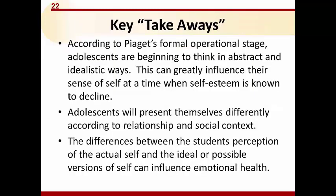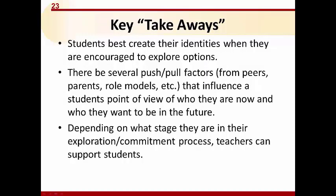Today's key takeaways: According to Piaget's formal operational stage, adolescents are beginning to think abstractly and idealistically, so we can greatly influence their sense of self at a time when self-esteem is known to decline. Adolescents will present themselves differently according to relationship and social context. Differences between a student's actual self and their ideal or possible selves can influence emotional health. Students best create their identities when encouraged to explore options. Push and pull factors from peers, parents, and role models influence who they are now and who they want to be. Depending on their stage of exploration and commitment, teachers can provide meaningful support.